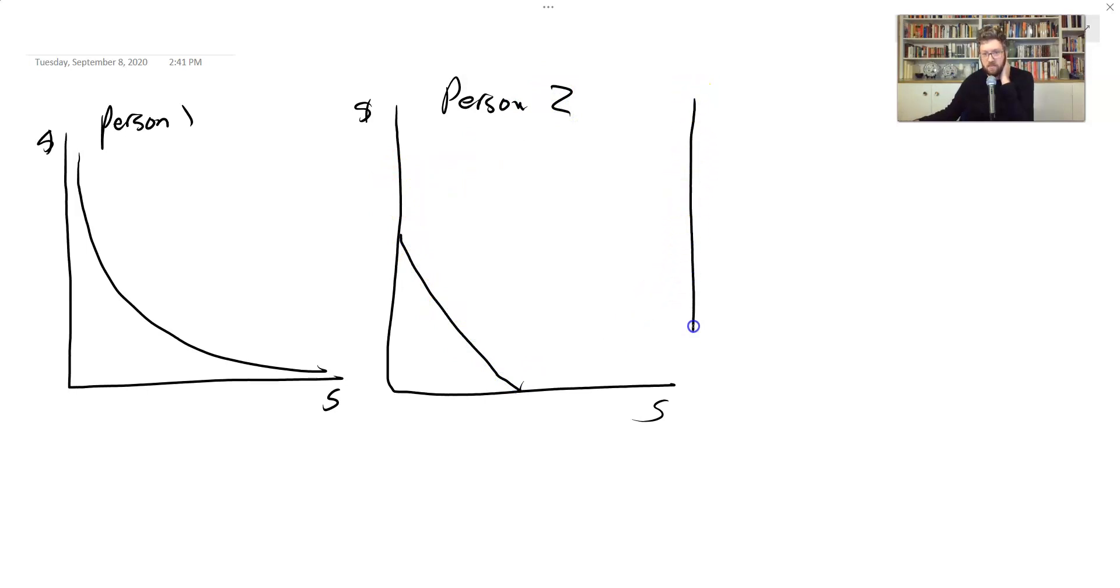We can add their demand together to figure out the demand for the entire market. I don't bother so much with the lowercase uppercase distinction here, but we should probably have this be more like q of s with a subscript, and then a capital Q with a subscript of s. So we're going to add these two together. How do we do it?